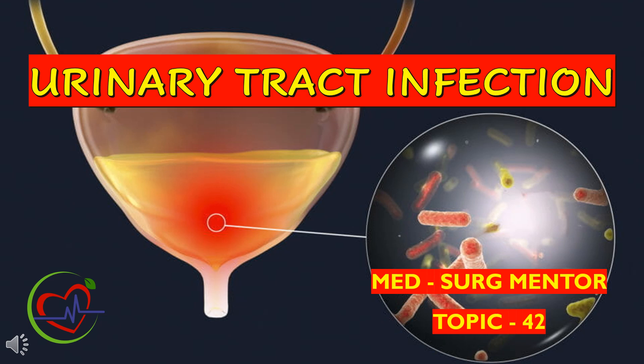Urinary tract infection is a very common infection of the urinary system which happens when bacteria, often from skin or rectum, enter the urethra. The largest group of patients with urinary tract infection is adult women, and studies have shown that 1 in 5 adult women experience this condition. The incidence of urinary tract infection in women tends to increase with increasing age. Welcome back to yet another episode of Med Surge Mentor — today let's see this condition, urinary tract infection, in detail.